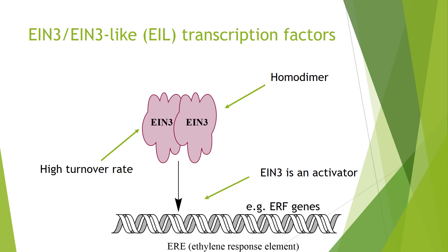When there is ethylene, the cleaved C-terminus of EIN2 can move into the nucleus and interact with the master regulator transcription factor EIN3. These are ethylene-responsive transcription factors that bind to ethylene response elements and induce an ethylene response in genes. However, without ethylene, they have a very high turnover rate — which is often beneficial for signal sensitivity — carried out by degradation via the proteasome after being polyubiquitinated by SCF E3 ubiquitin ligase complexes, which require F-box proteins that provide substrate specificity.